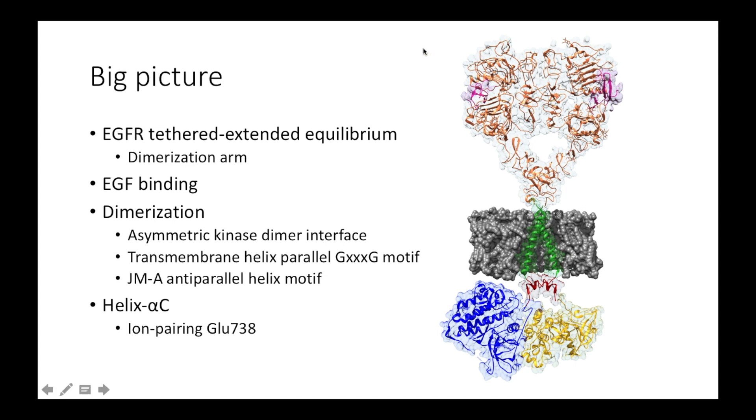Now we should be able to understand the big picture of how EGFR dimerization influences function. The extracellular module of the EGFR exists in a tethered-extended equilibrium. EGF binding stabilizes the extended conformation. The extended conformation makes dimerization of the extracellular modules possible, leading to favorable interactions between the transmembrane and juxtamembrane regions. And most importantly, between kinase domains. In the activated kinase domain, helix alpha-C is pushed inwards towards the ATP binding active site, allowing the ion-pairing glutamate to interact with the active site lysine and stabilizing the bonding of ATP.